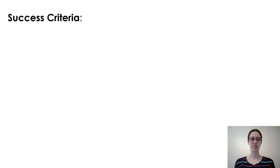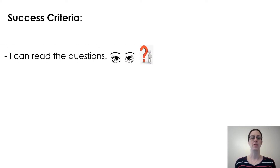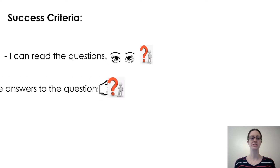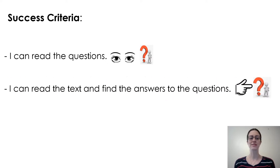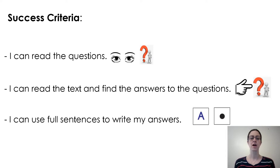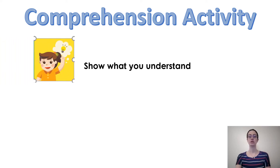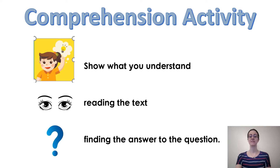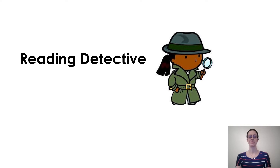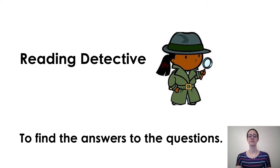Here is the success criteria. You don't have to write it down — this just helps you with the steps that you need to be successful. I can read the questions. I can read the text and find the answers to the questions. I can use full sentences to write my answers. This is a comprehension activity where you show what you understand by reading the text and finding the answer to the question.